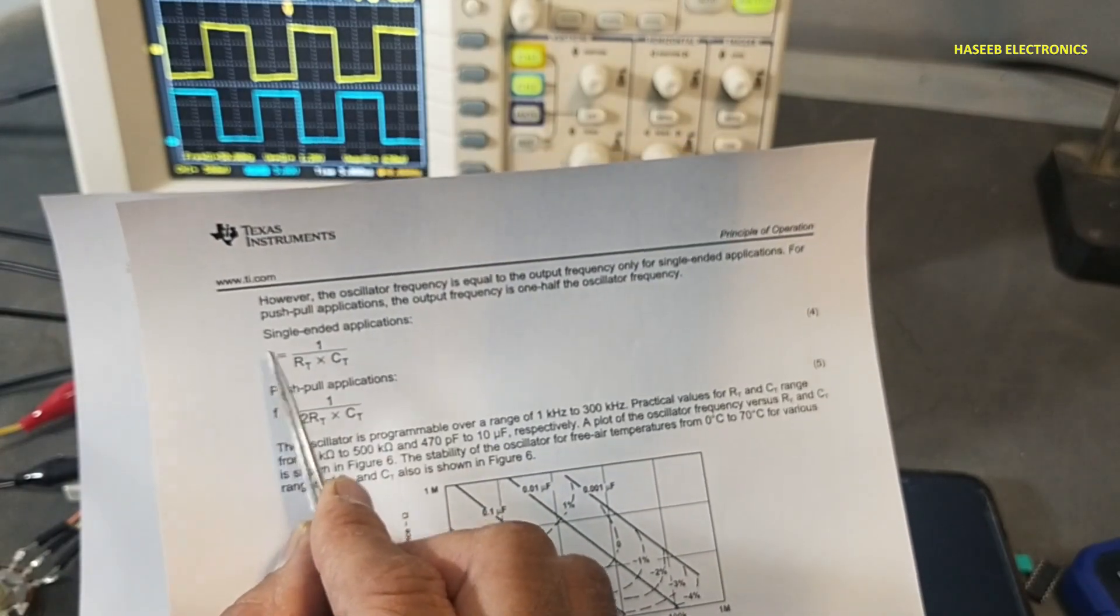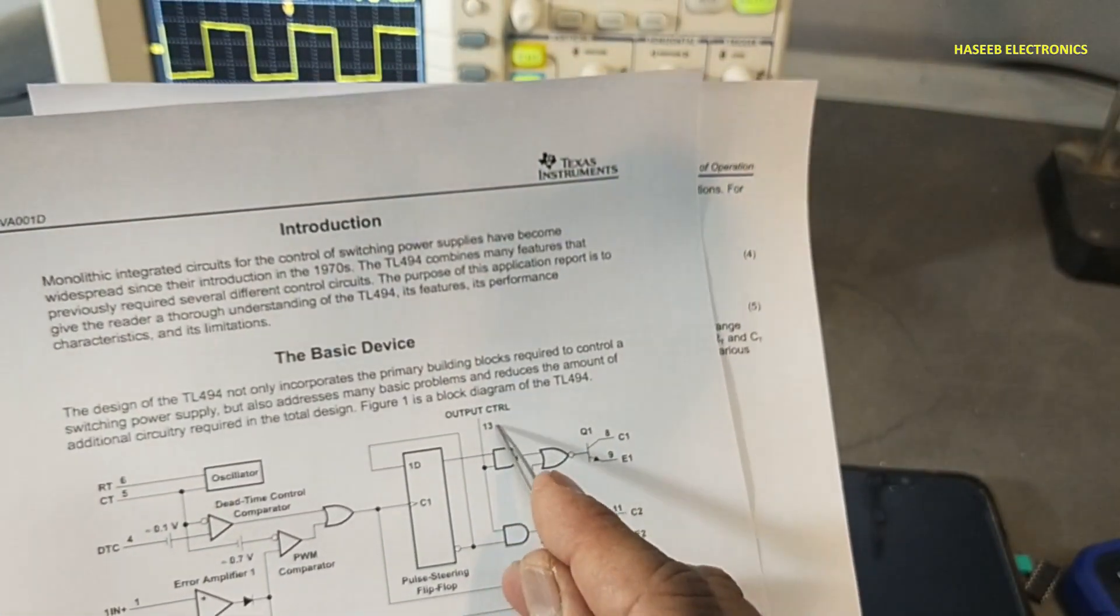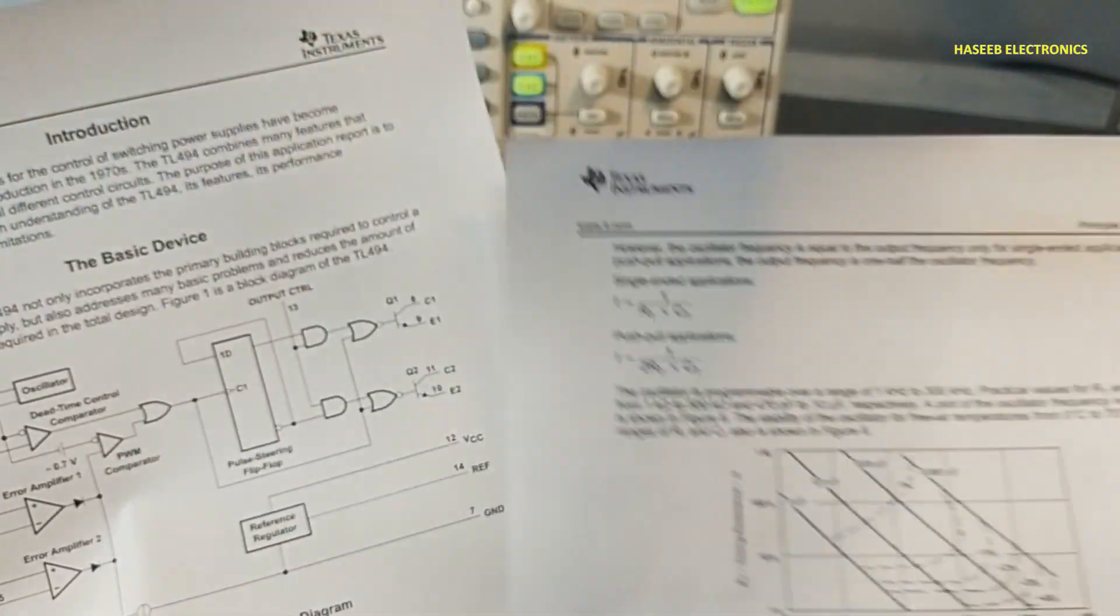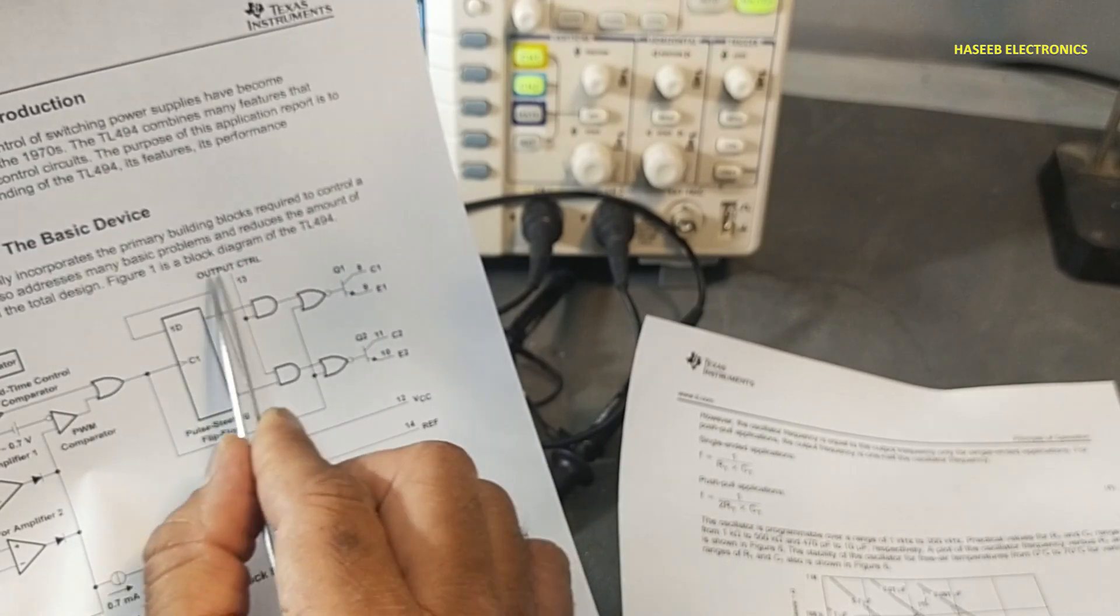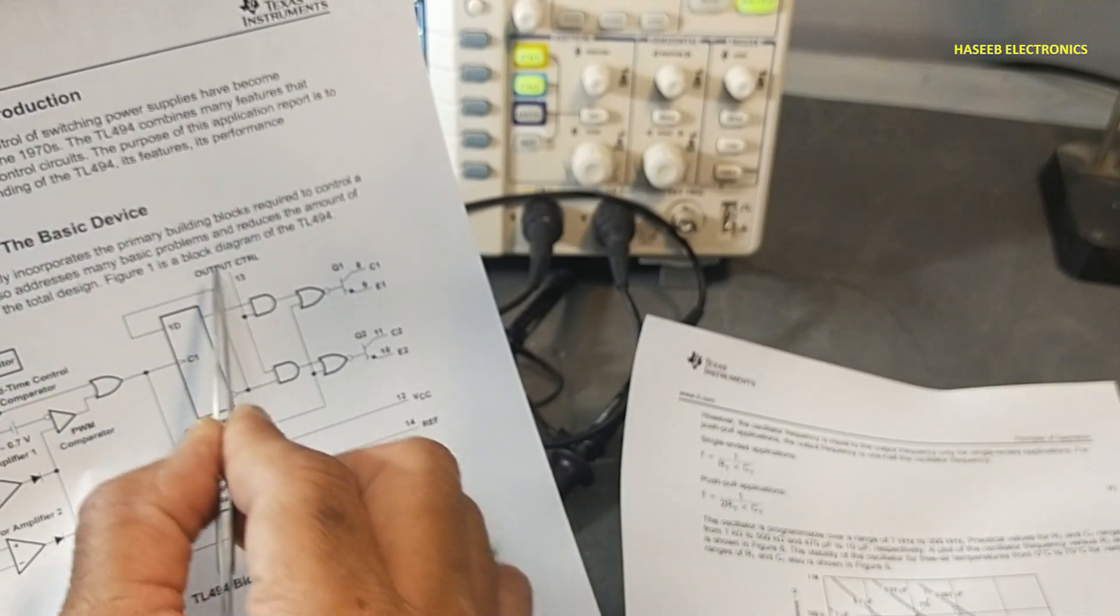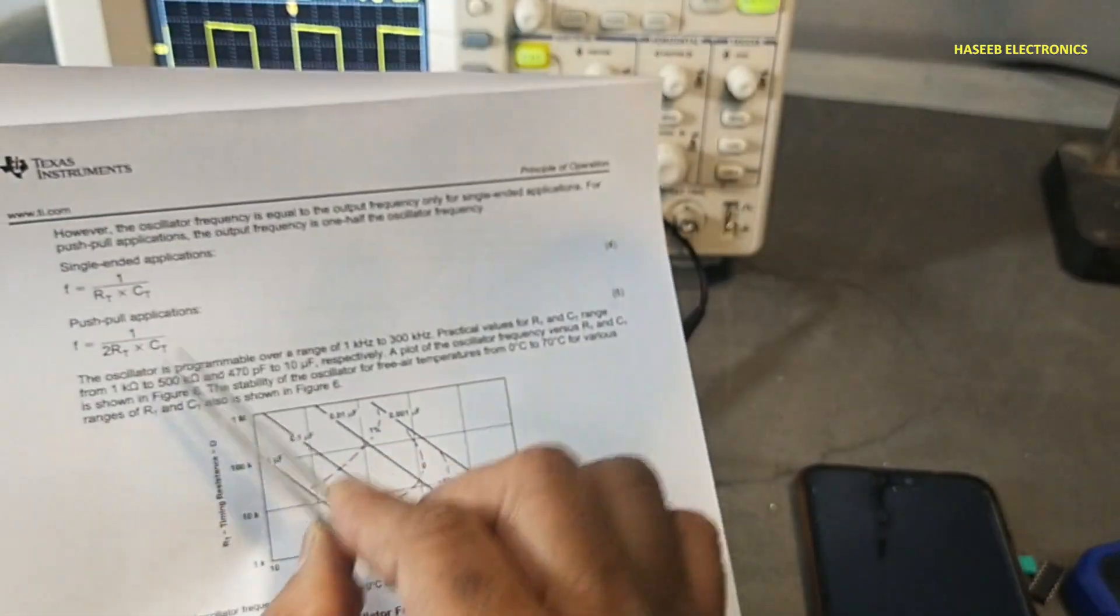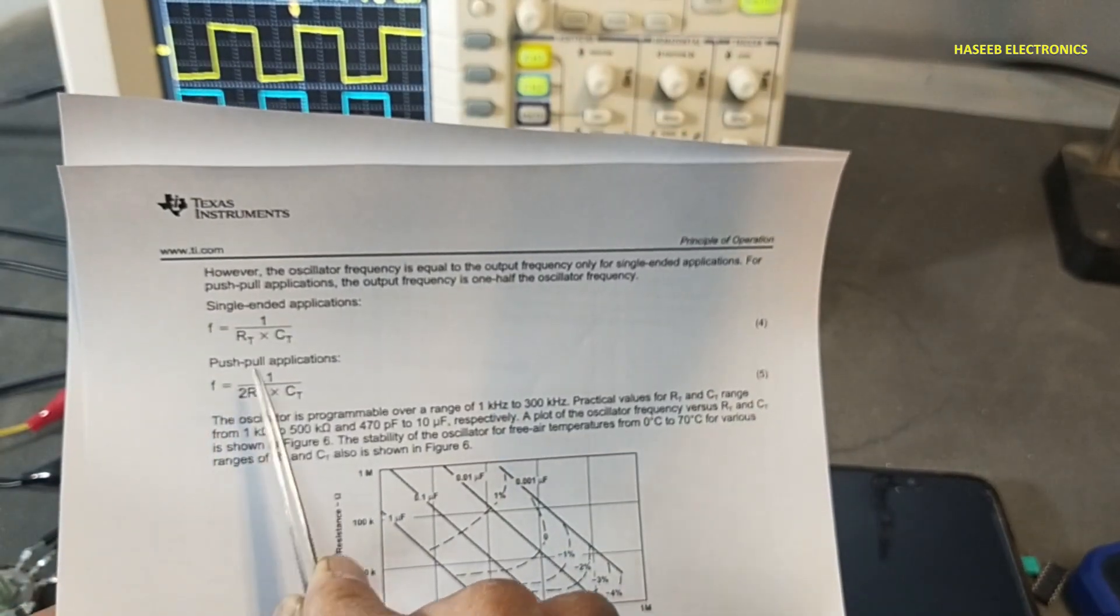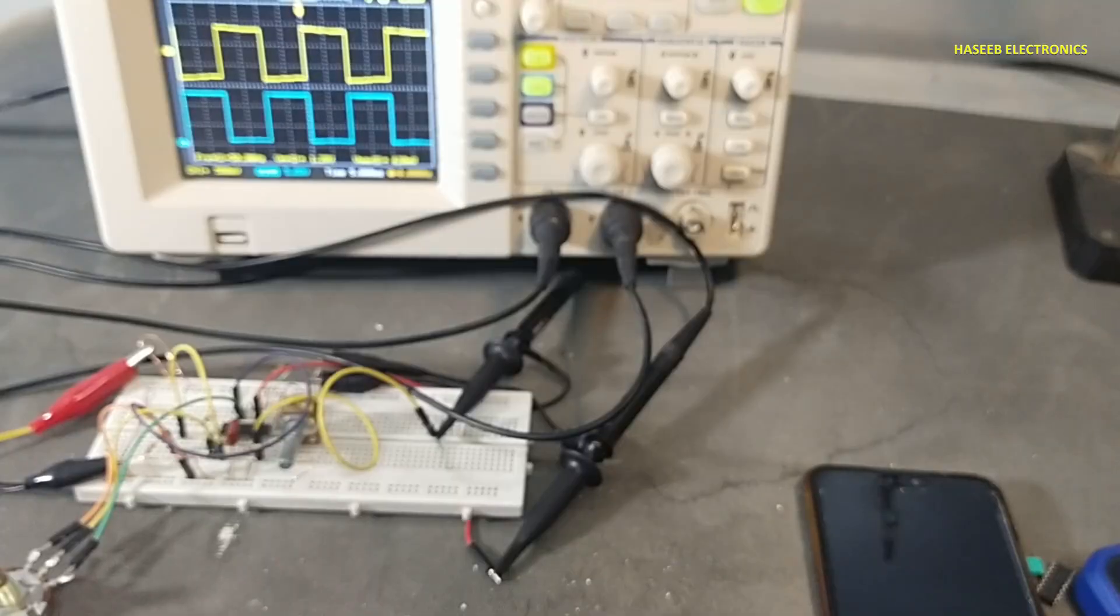If we want to use single ended operation, what is single ended? When pin number 13 of this IC is grounded, it will work in single ended operation. When pin number 13 is connected to reference pin number 14, that means it is pulled up high. At that time the frequency will divide by two. We can use directly this formula because we need 100 hertz.